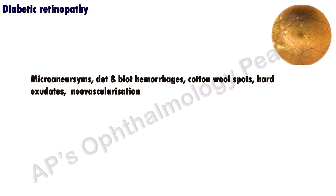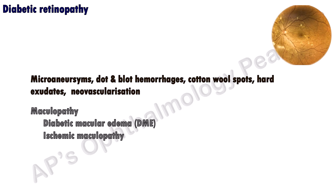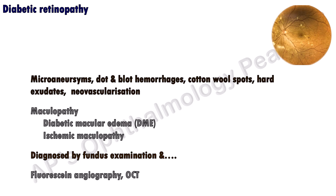Diabetic retinopathy is characterized by the presence of microaneurysms, dot and blot hemorrhages, cotton wool spots, hard exudates, and neovascularization in advanced cases. The main cause of gradual diminution of vision in diabetic retinopathy is macular involvement in the form of diabetic macular edema or ischemic maculopathy. Fundus examination aids diagnosis, with additional input from fundus fluorescein angiography and optical coherence tomography.